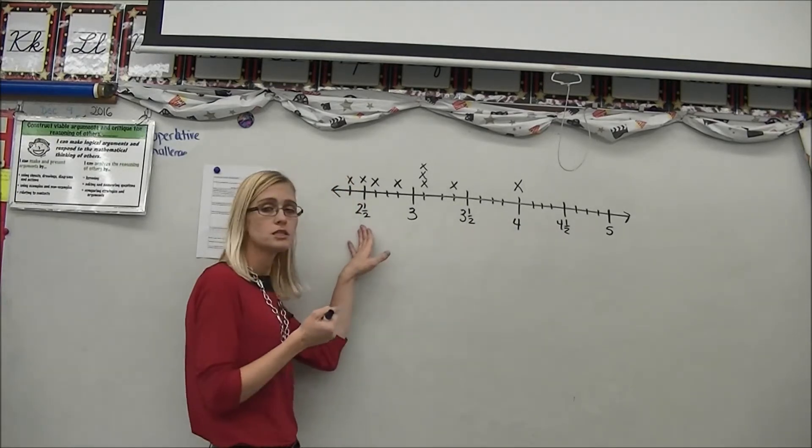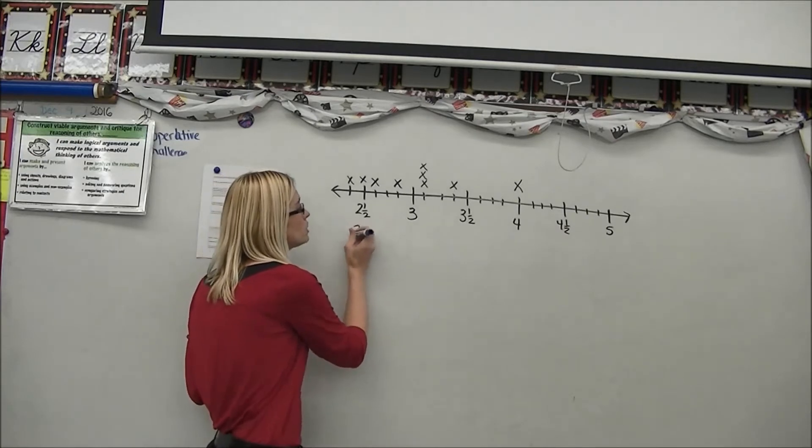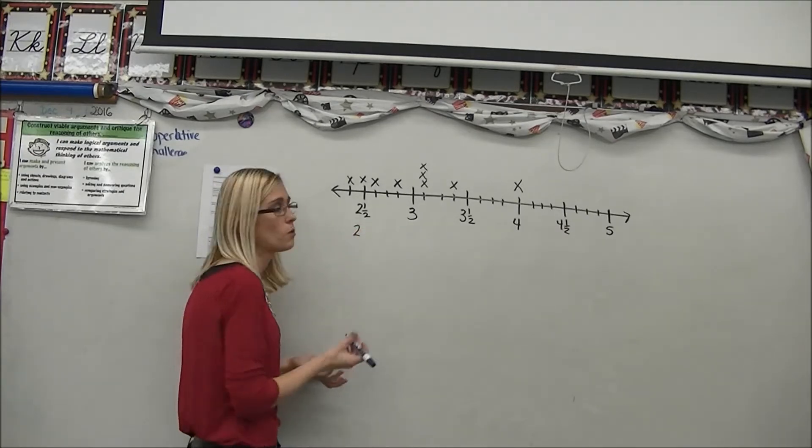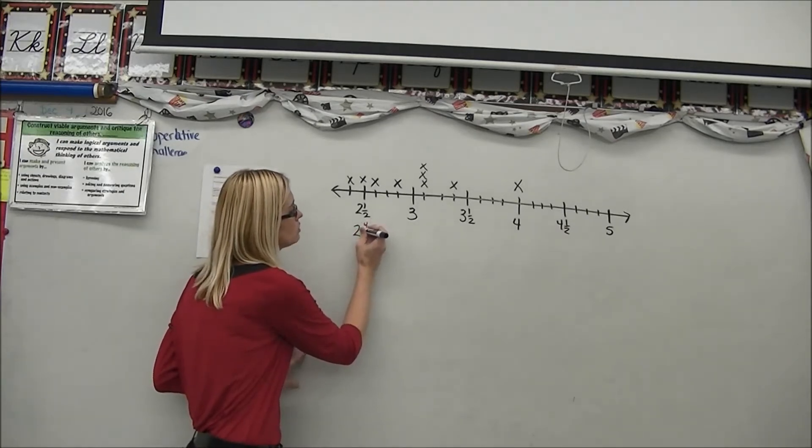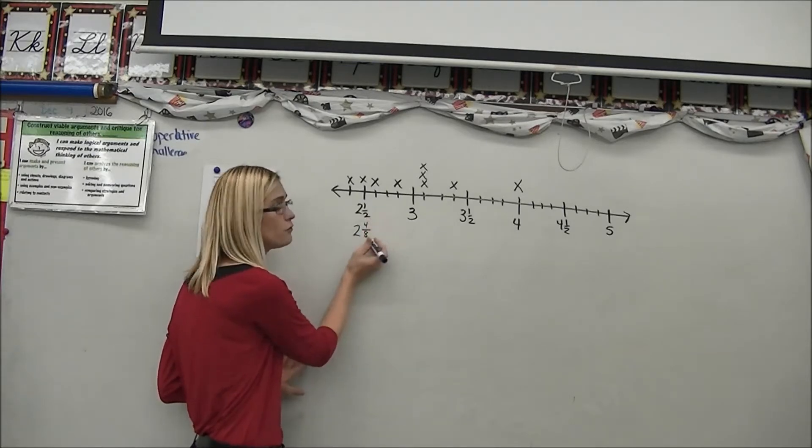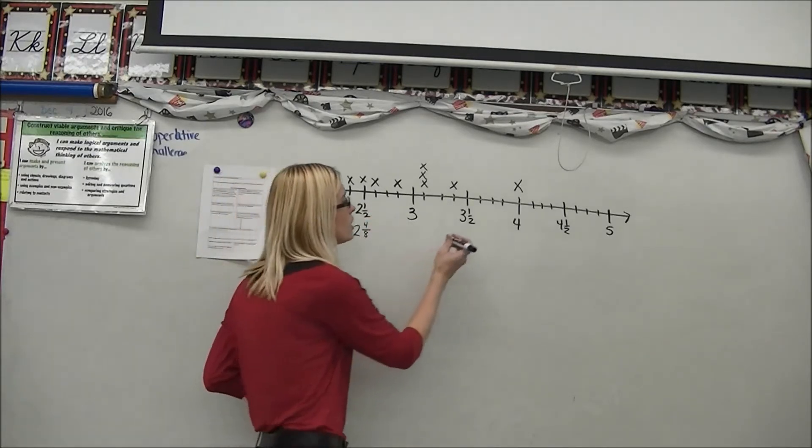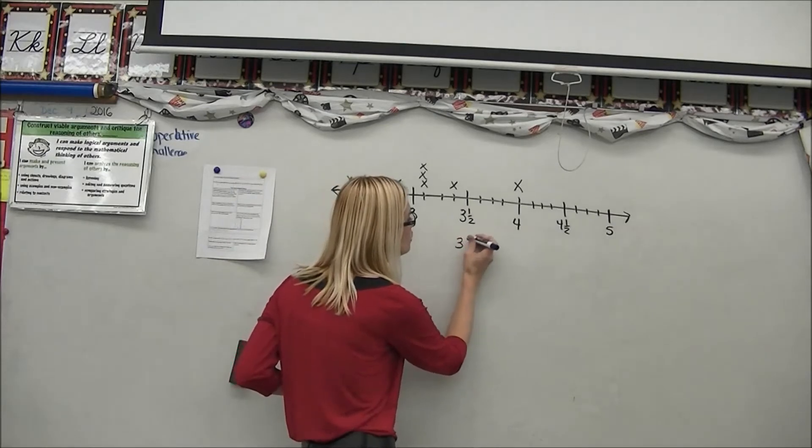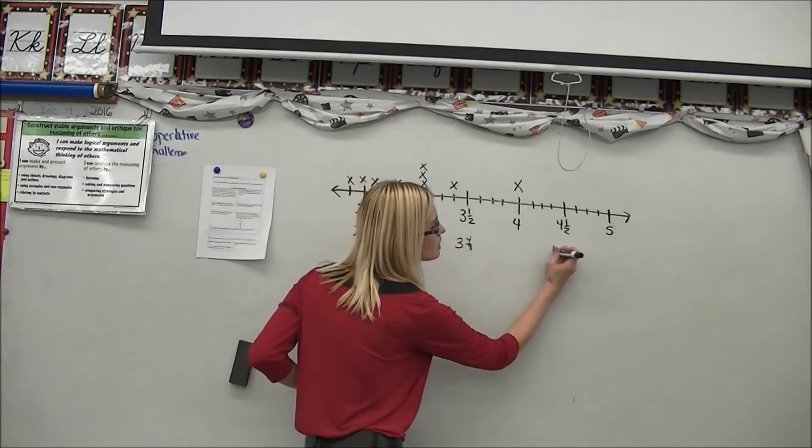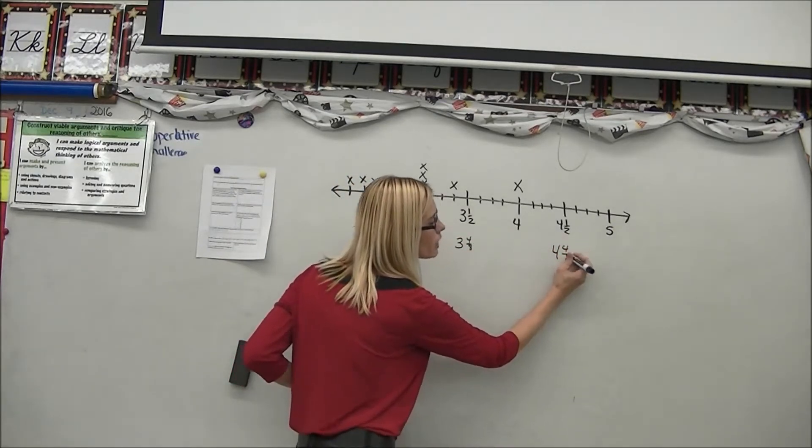So I'm going to actually relabel this in terms of eighths. 2 and 1 half is actually equivalent to 4 eighths because 2 times 4 is 8, so 1 times 4 is 4. And I'm going to do the same thing here, 3 and 4 eighths. And the same thing here, 4 and 4 eighths.